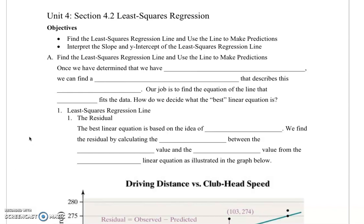Now that we've talked about correlation and how we determine if there is correlation, let's talk about the least squares regression line. Once we've determined that we have linear correlation, we can find a linear equation that describes this relation.